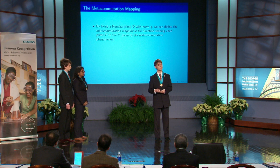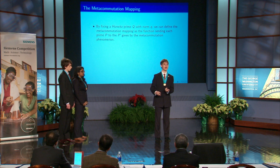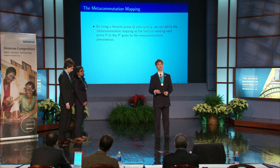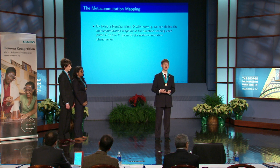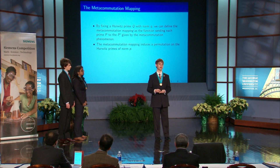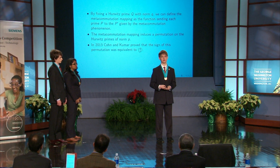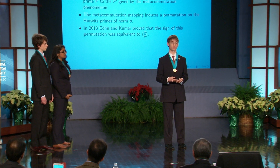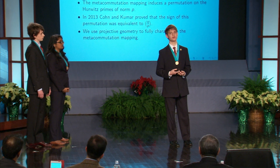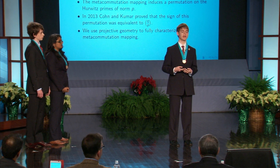Using the idea of metacommutation, we can define the metacommutation mapping, or permutation. This is a mapping of a specific prime Q of norm q acting on the primes of a specific norm p. We take each P times Q, swap by metacommutation to obtain the new factorization Q-prime times P-prime, and the function sending each prime P to the associated P-prime induces a permutation on the Hurwitz primes of norm p. In 2013, professors Cohn and Kumar studied this permutation and found that its sign was equivalent to the Legendre symbol of q on p. In our research, we used techniques from projective geometry to completely characterize the metacommutation mapping.